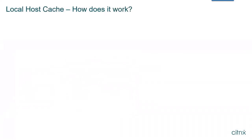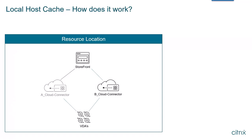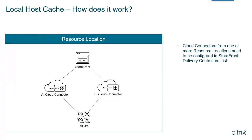So how does LHC work? When a resource location enters LHC mode, the first cloud connector listed alphabetically on the Storefront server gets elected as the primary connector for the resource location. If, for any reason, that connector is unavailable, then the next connector on the list would be chosen as the primary. For this reason, all cloud connectors in your resource location should be added to Storefront as delivery controllers, and all VDAs must be configured to point to all cloud connectors for LHC to work properly.